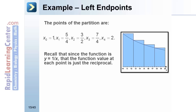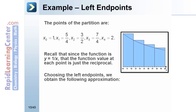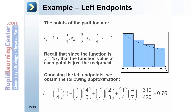Recall that since the function is y equals 1 over x, the function value at each point is just the reciprocal. Choosing the left endpoints, we obtain the approximation L4 equals 1/4 times 1 plus 1/4 times 4/5 plus 1/4 times 2/3 plus 1/4 times 4/7, which equals 319/420, approximately 0.76.